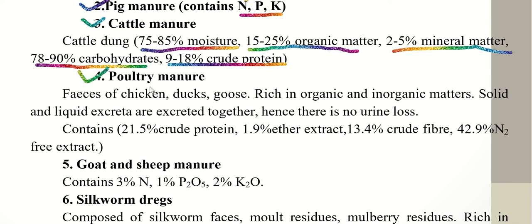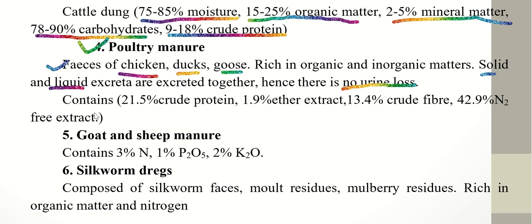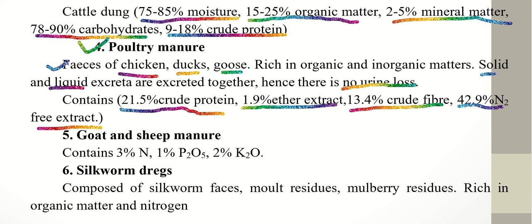Poultry manure includes waste from chickens, ducks, and geese. It is rich in both organic and inorganic matter. Solid and liquid excreta are excreted together, so there is no urine loss. Poultry manure contains 21.5% crude protein, 1.9% ether extract, 13.4% fiber, 42.9% nitrogen-free extract, and some free extract.